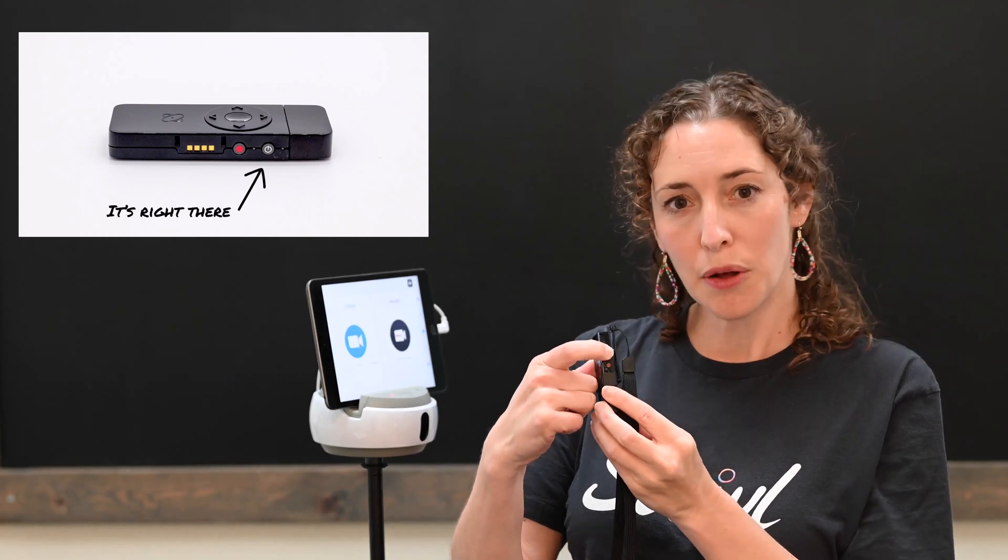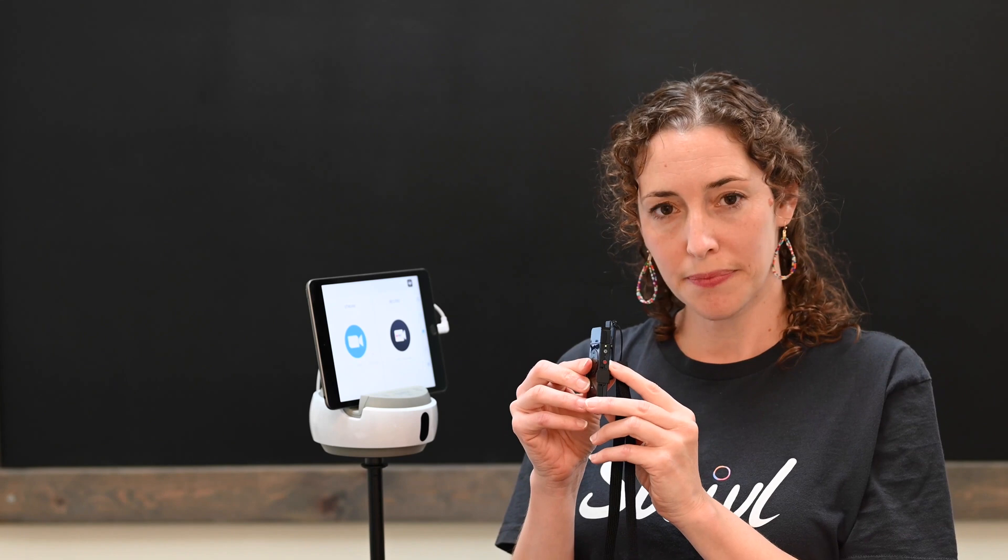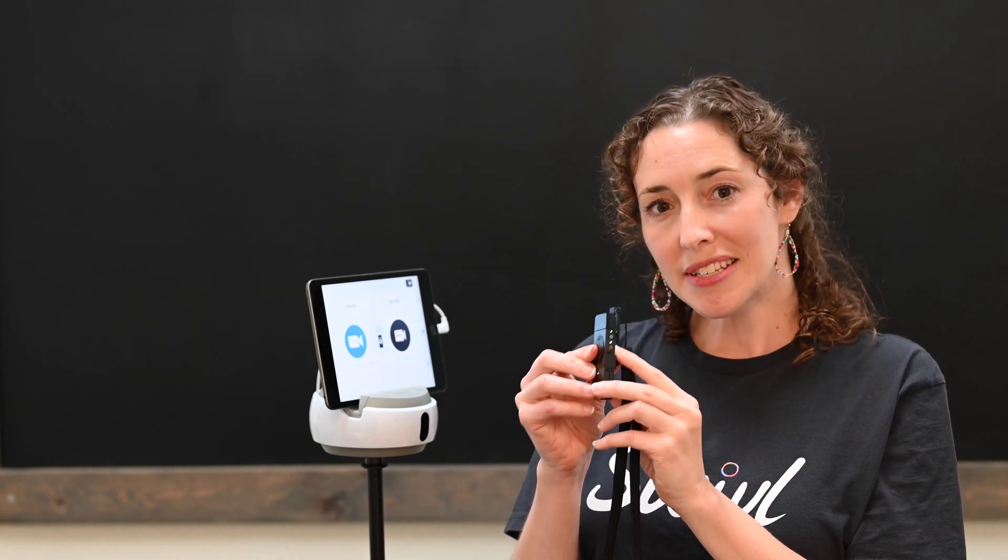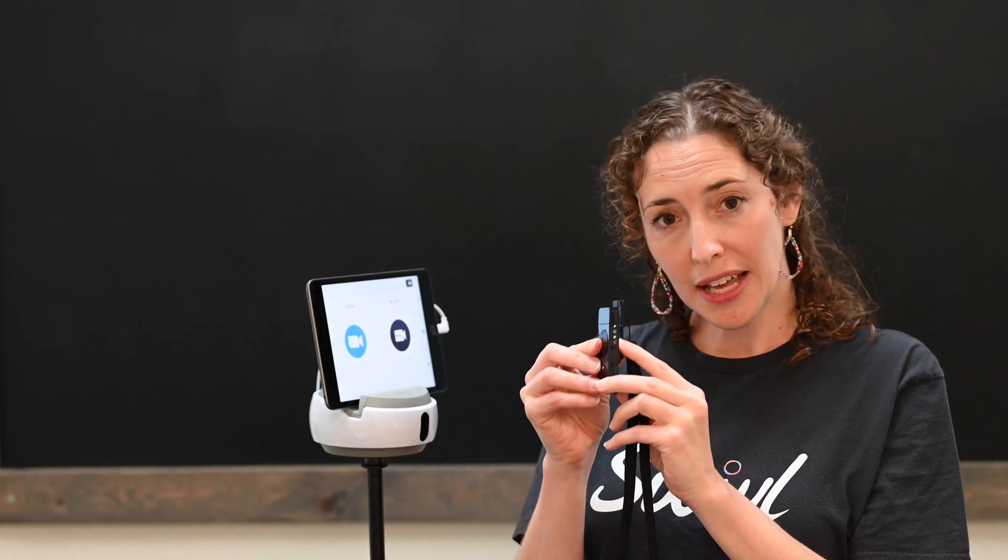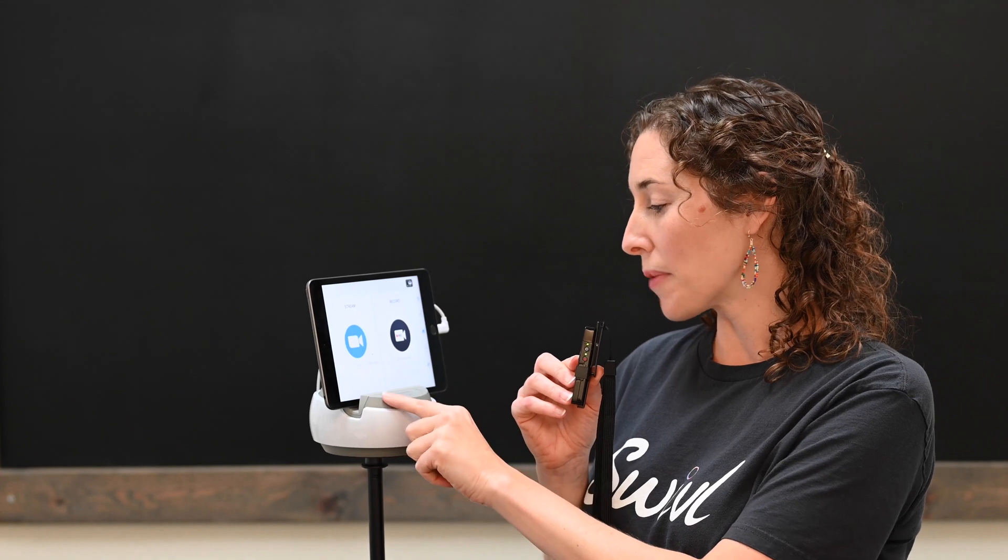To turn on the marker, you'll press the power button on the side. Hold it for about one second and you'll notice some lights flashing. As soon as the marker is successfully connected to the robot base, you will see two solid green lights on the side of the marker and two solid green lights on the top of the Swivel robot.